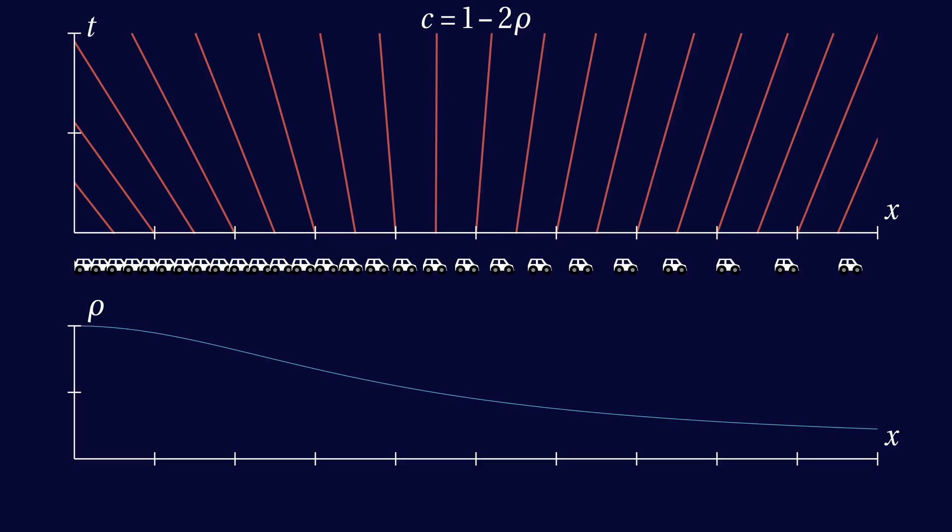Conversely, if we see the plot of characteristics, we can tell by their slope what traffic density they correspond to.